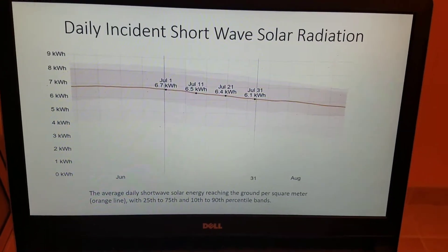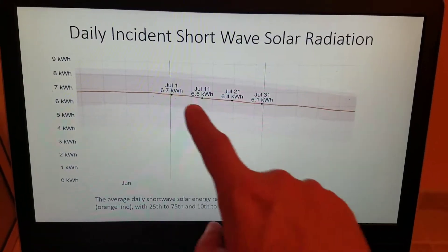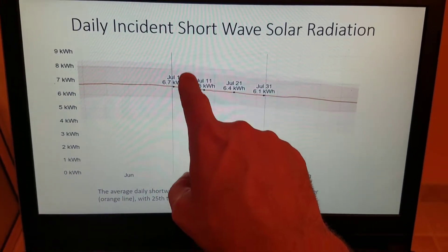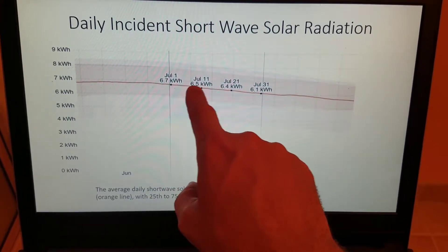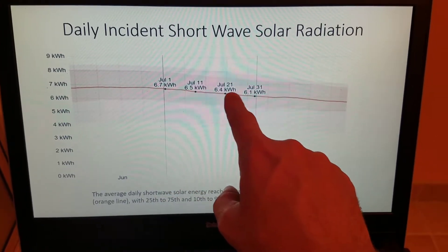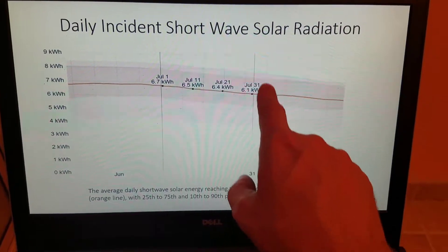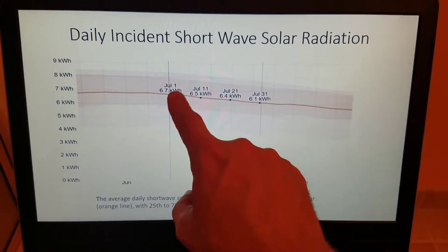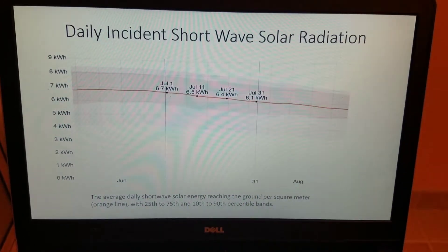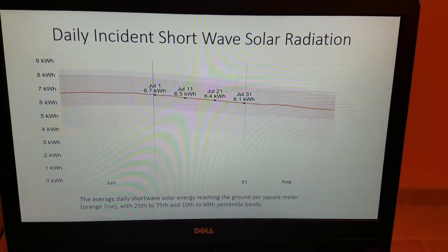The overall incident shortwave solar radiation starts at 6.7 kilowatt hours on July 1st. And that slowly declines throughout the month by the end of the month down to 6.1 kilowatt hours.